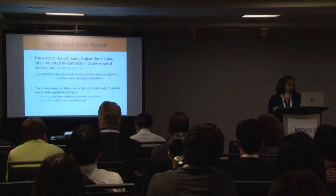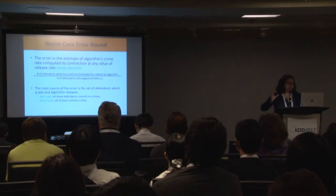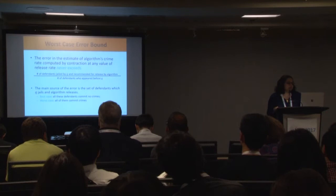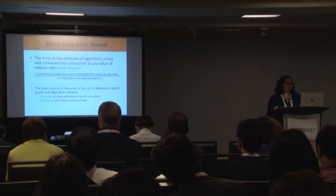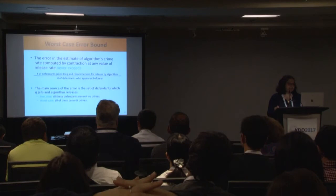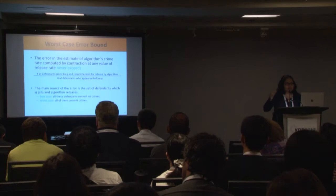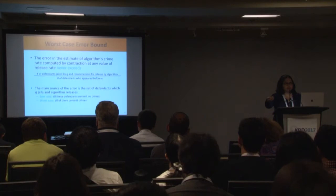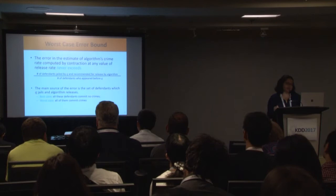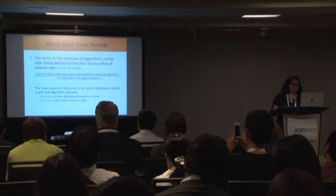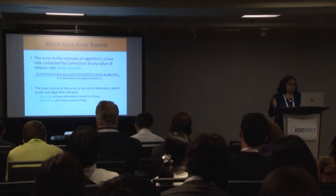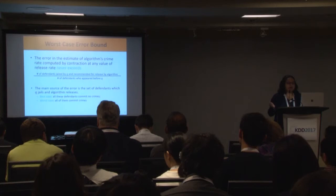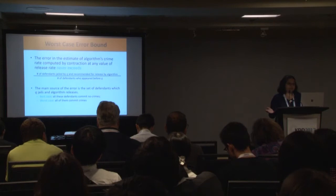Let me give a brief overview of the worst case error bound. The error in the crime rate estimate from contraction never exceeds a certain fraction — the disagreement stems from defendants jailed by the most lenient Judge Q who are recommended for release by the algorithm. In the best case, all released people commit no crimes; in the worst case, all commit crimes. This is how we bound the error from the contraction technique.